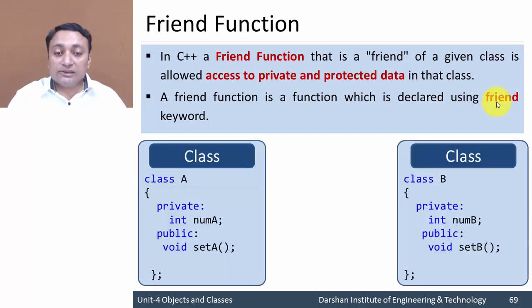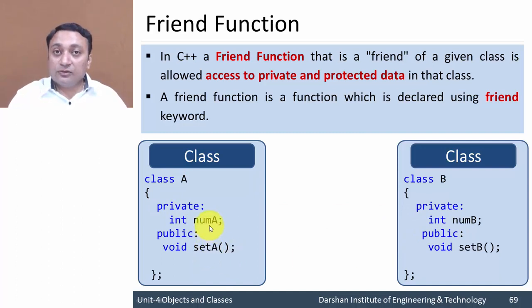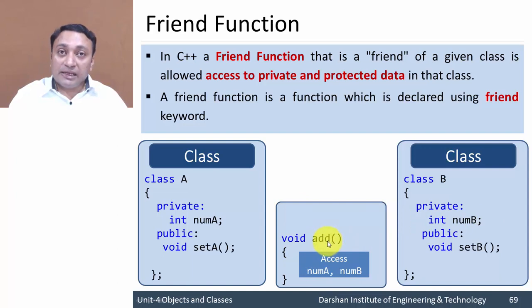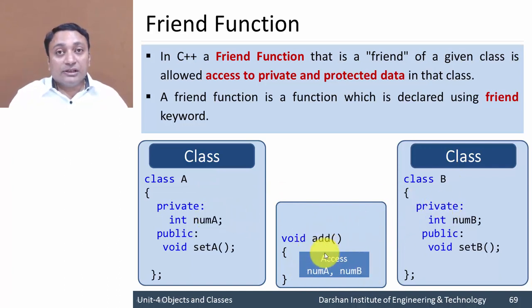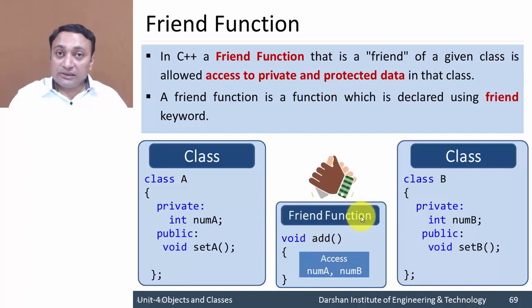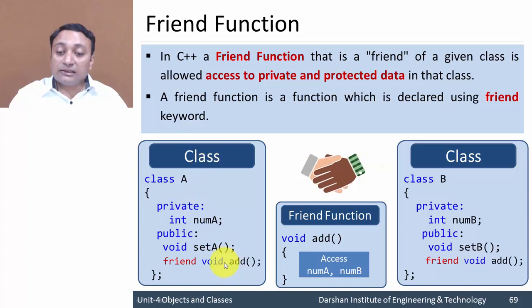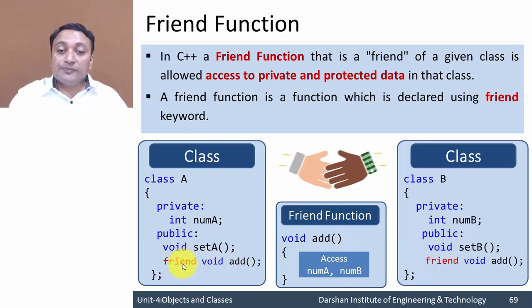Let us discuss how friend function works and what is the need for it. Suppose we have two classes, class A and class B, both having private members num_a and num_b, and member functions set_a and set_b to assign values. Now there is a requirement to add num_a and num_b in a single function. To access private members of both classes in one function, we use a friend function — declared in both classes with the friend keyword prefix.